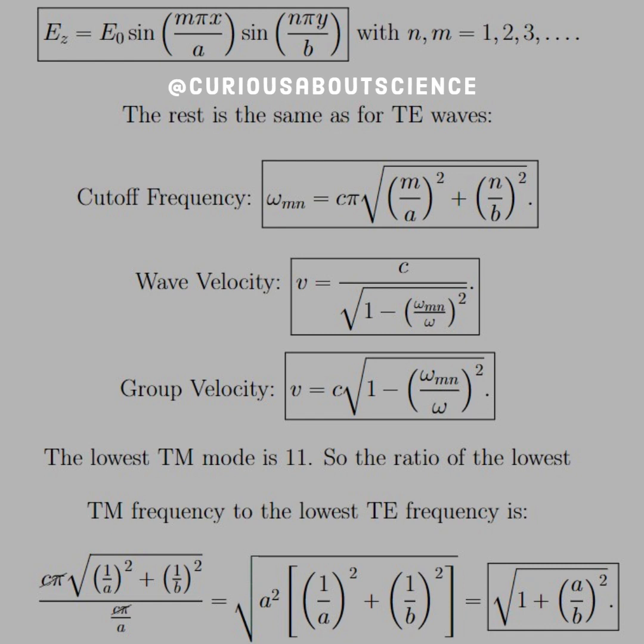The lowest TM mode is (1,1). So the ratio of the lowest TM mode to the lowest TE mode—remember, the lowest TE was (1,0). We can't kill off everything. We had a cosine in the TE mode, so one of them was equal to zero. No big deal.